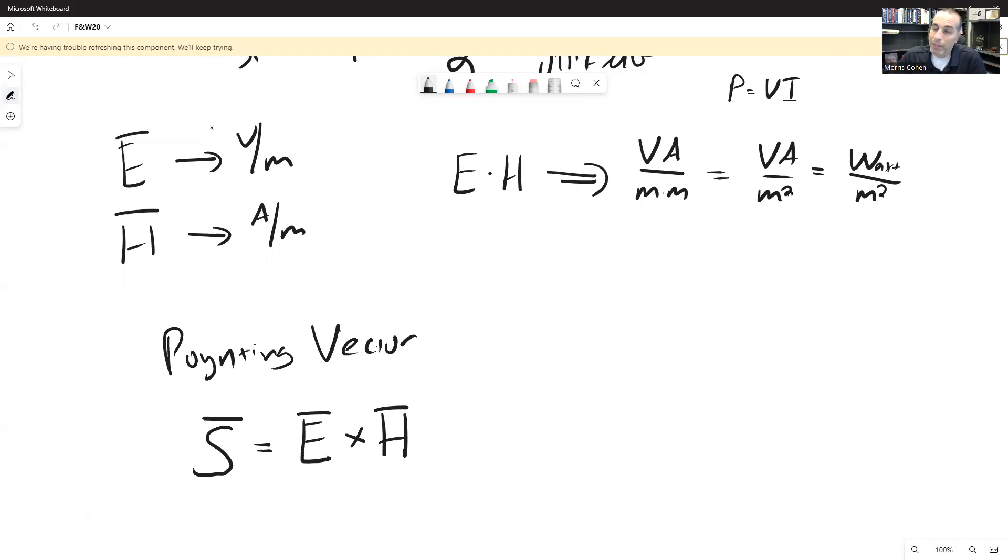And so that's helpful. But the other thing is the direction is going to matter. Because you also know that the electric field crossed with the magnetic field is going to point in the direction of propagation. So this both has an amplitude that's equal to the power flow, or the power flow density. We also know that it points in the direction that that power is flowing.